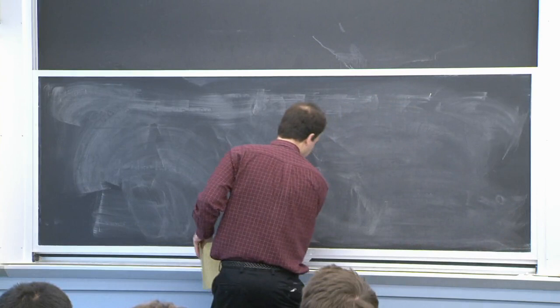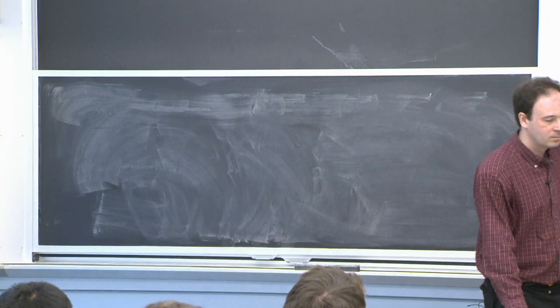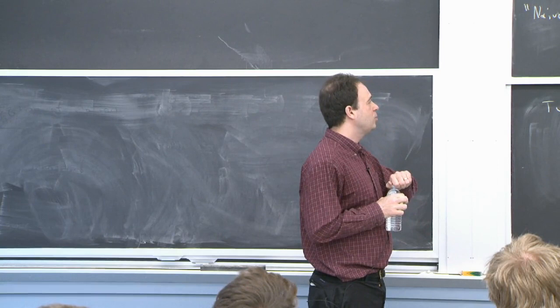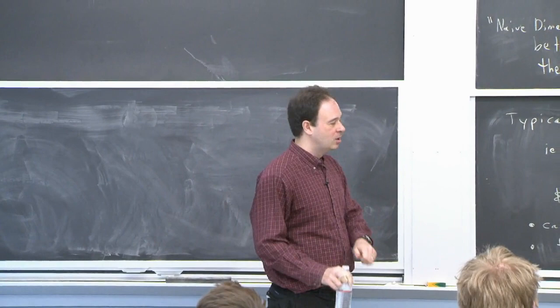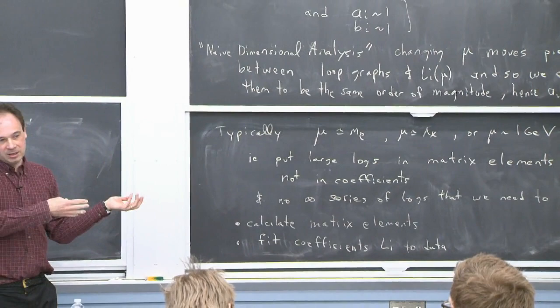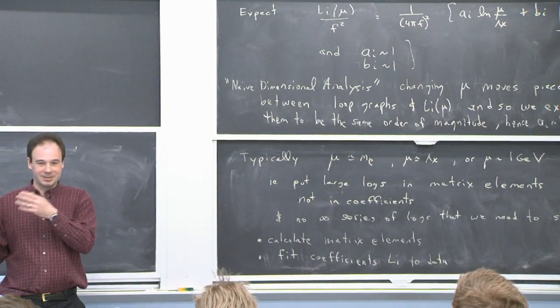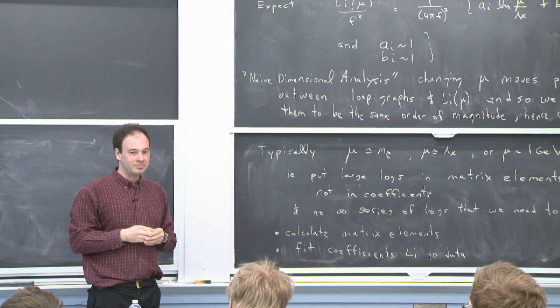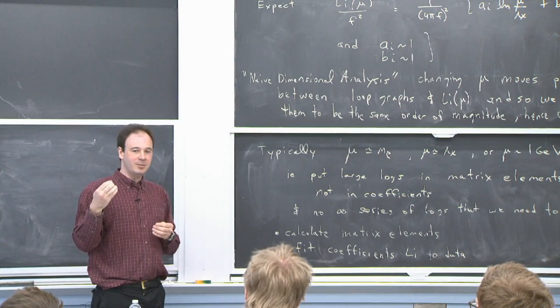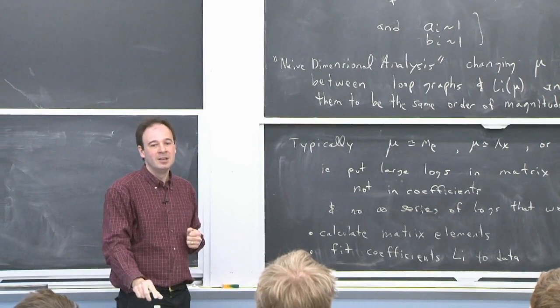A student asks why a large log doesn't screw up the expansion. The answer is that it only happens once. The large log in the matrix element times the coupling is not something that repeats at higher orders — once you go to higher loops, you're getting power suppression, not just loop suppression. The loops give power suppression, and that changes things significantly compared to gauge theory.